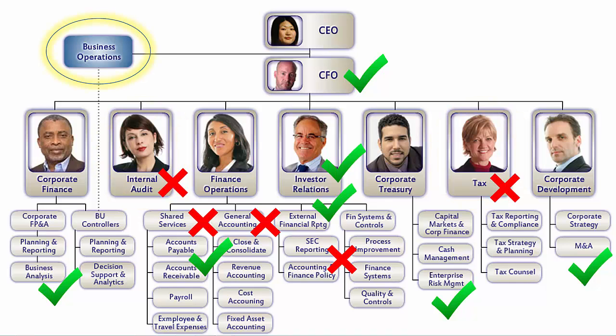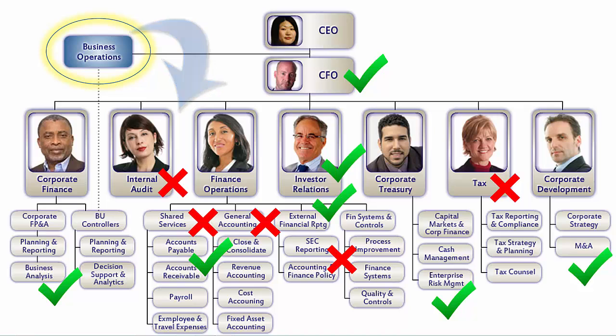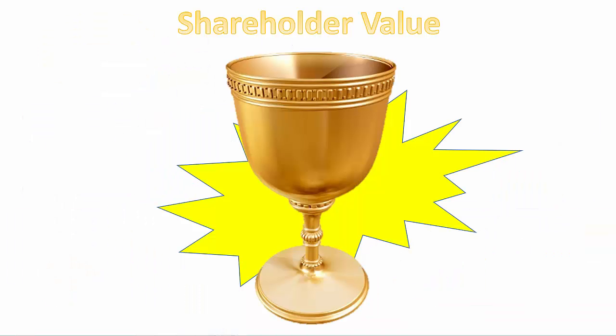Which leaves one last question: what about the rest of the organization? Do other departments need to know finance? The answer is absolutely. Whether the managers of these departments have some understanding themselves, or whether they collaborate with those in the finance department we discussed in this lesson, every facet of business benefits from a financial orientation. Embedding a financial perspective in management decision-making ensures that better, more profitable decisions are made, and that the positive creation of shareholder value alluded to during the course introduction is fully achieved.